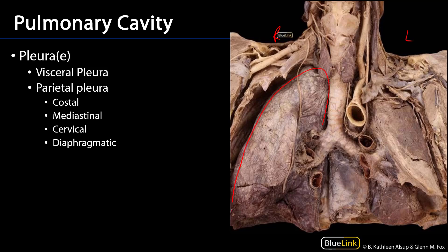There's a visceral pleura — that visceral pleura is what adheres to the organ, in this case the lung. And then there's the parietal pleura, which is going to line all of the surfaces which comprise that pulmonary cavity.